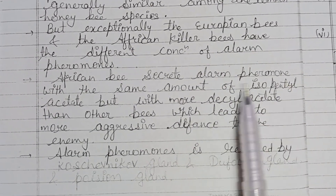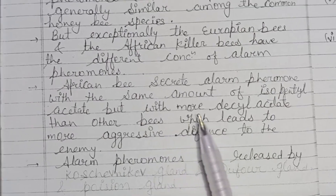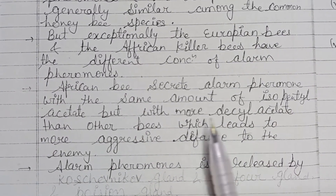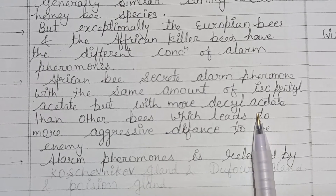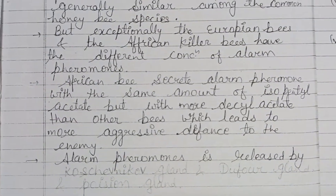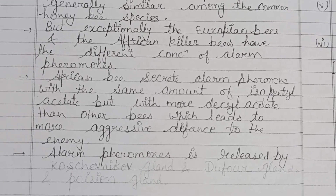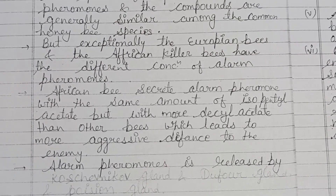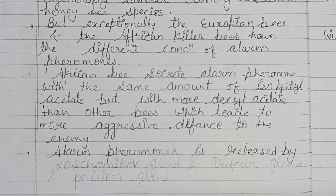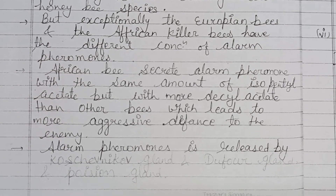African bees secrete alarm pheromone with the same amount of isopentyl acetate but with more decyl acetate than other bees, which leads to more aggressive defense against enemies. The higher amount of decyl acetate in the African bee results in more aggressive defensive behavior.